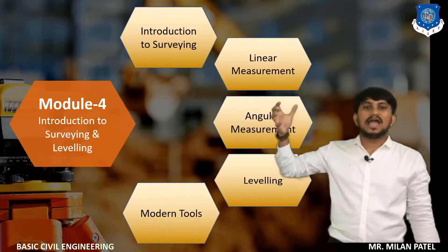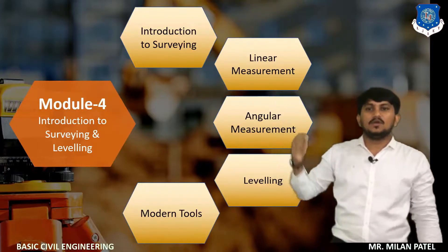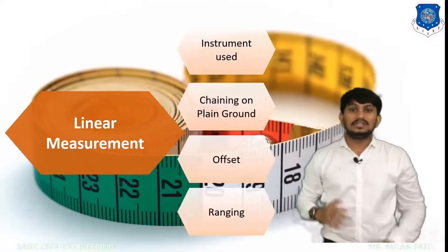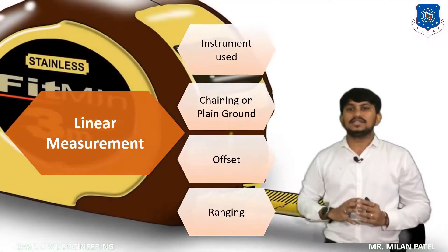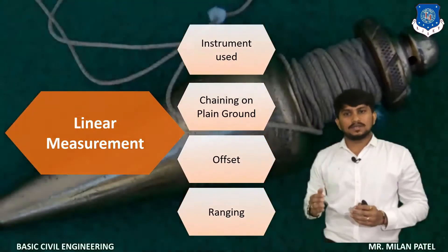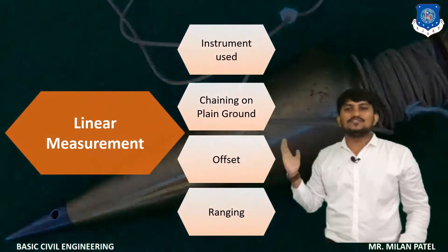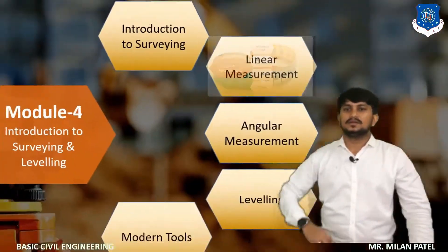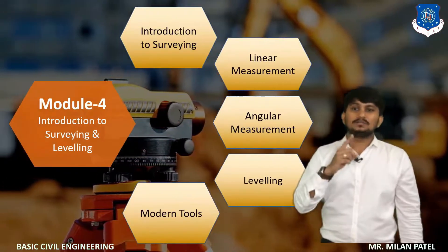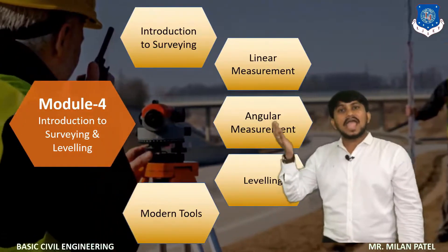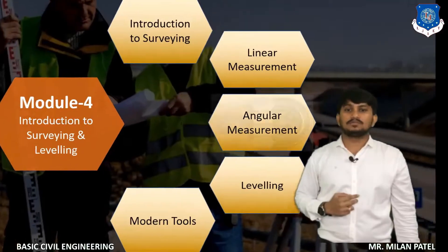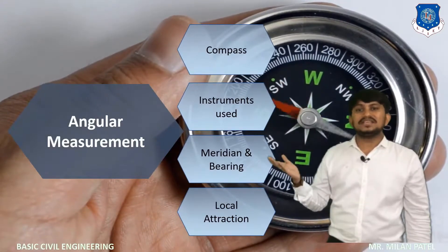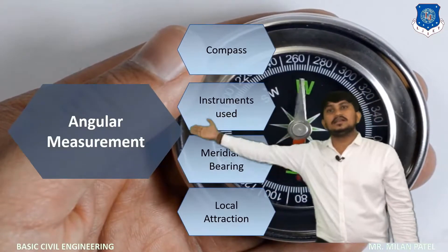The next step is to develop skills regarding linear measurement. During surveying, you mark different points on the earth, and the next step is to connect those points precisely using different instruments. In this part, we will learn all about chaining, offsetting and ranging on plain ground, and also do linear measurement practically. By linear measurement you can find distances, but for the angles of boundaries, we will learn angular measurement, using two types of compasses. We will discuss terms like meridian, bearing and local attraction in detail.